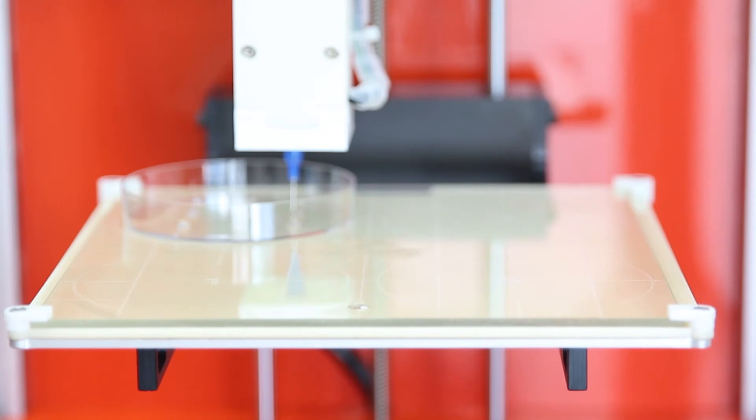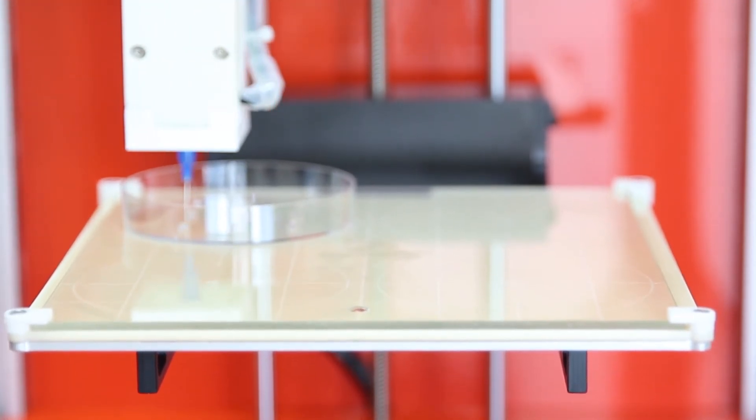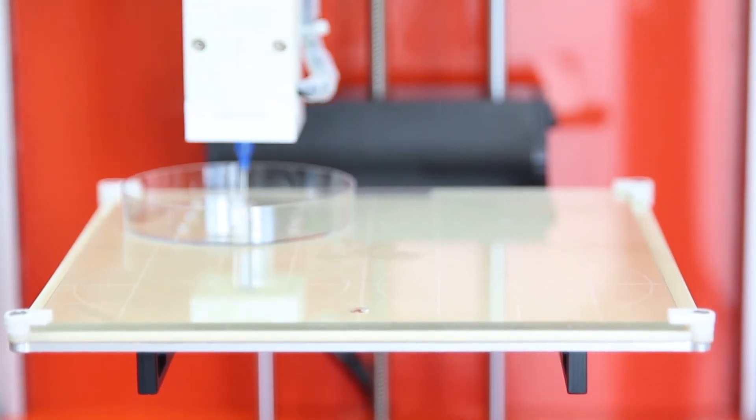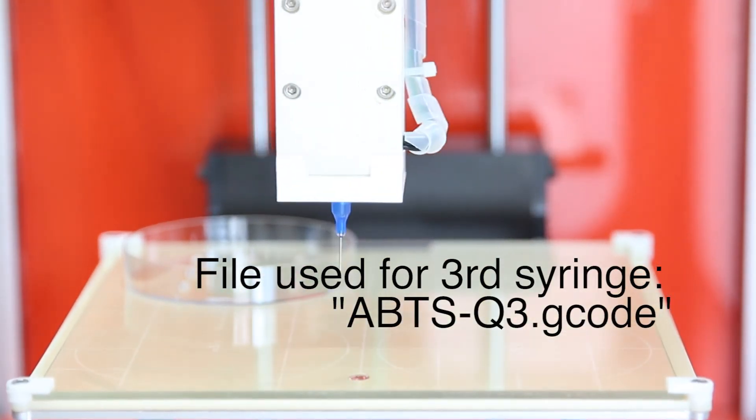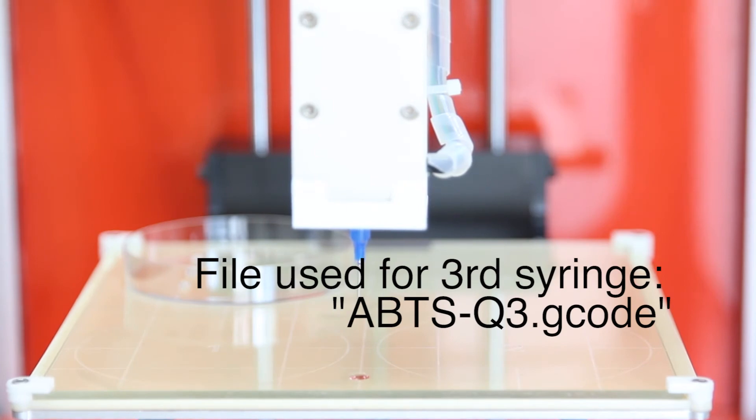Once the alginate syringe has finished printing, you will repeat the same steps to print the ABTS syringe, by priming the syringe, loading the ABTS file, and printing.